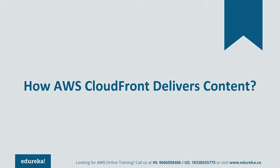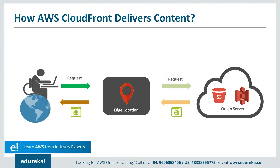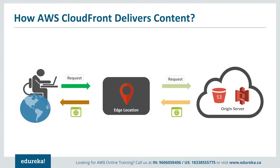How does this content get delivered to you? Suppose you are a user sending a request that needs to reach a particular server. Your request first goes to an edge location, and from there to your server. Suppose you are based in the USA and want to fetch data based in Australia. Instead of sending that request directly to the server in Australia, AWS has interim edge locations closer to you. The request goes to the edge location first and checks whether the data you are requesting is already cached there. If it is not cached, then the request is sent to your original server, the data is delivered to the edge location, and from there it comes to you.